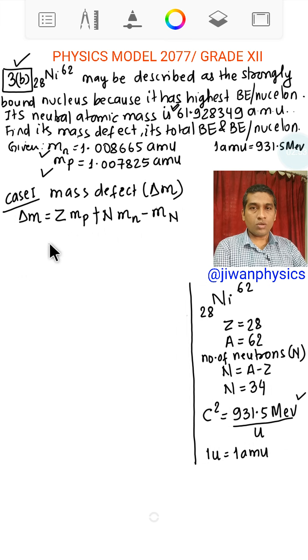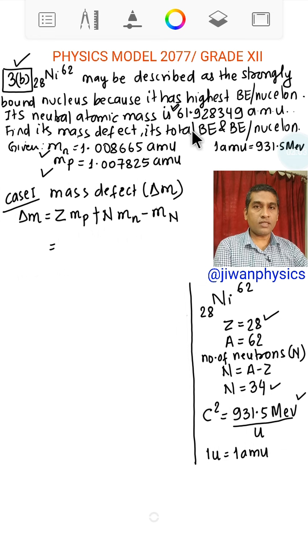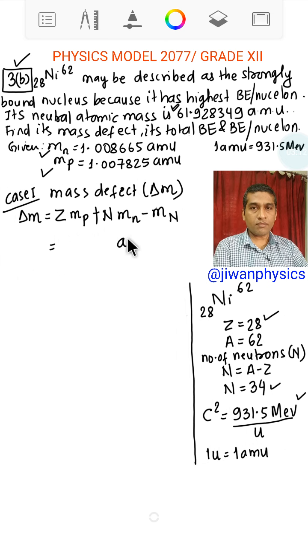We have to put the value of Z, Mp, N, Mn, and mass of nucleus to get delta M. The value of delta M comes out in AMU.